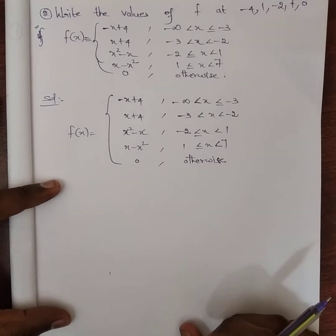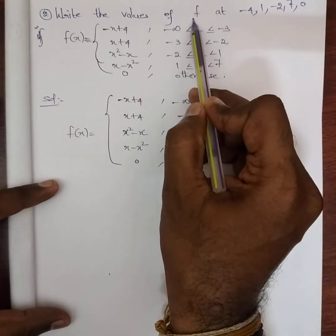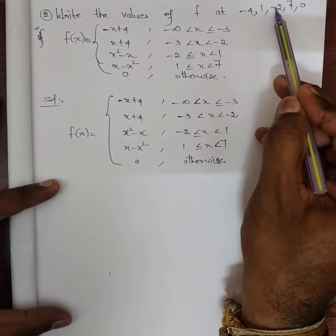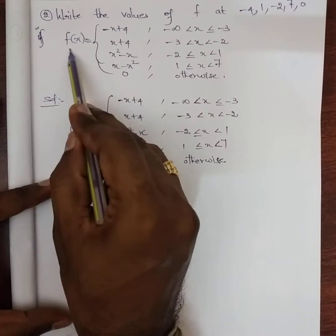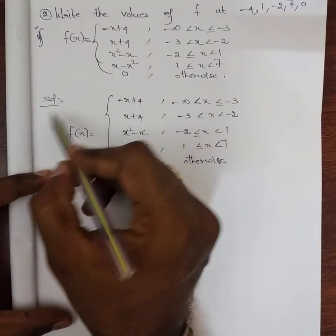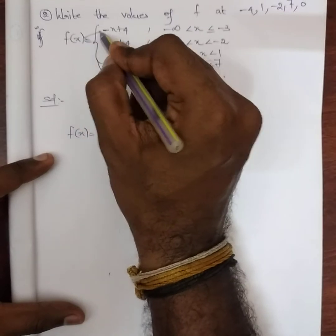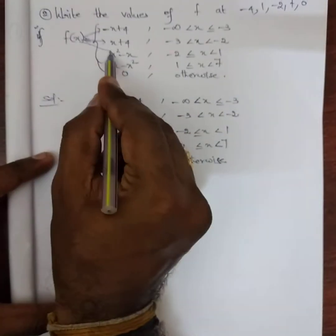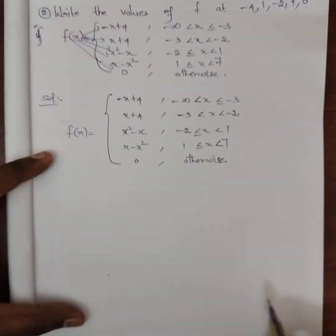Second sum. Exercise 1.3. Write the values of f at minus 4, 1, minus 2, 7, and 0. f(x) has totally 5 functions: first function, second function, third function, fourth function, and fifth function.